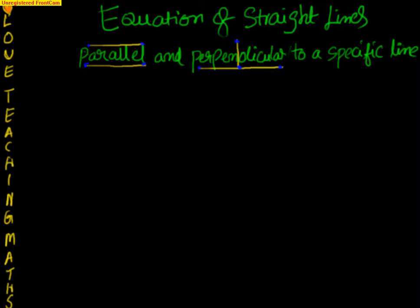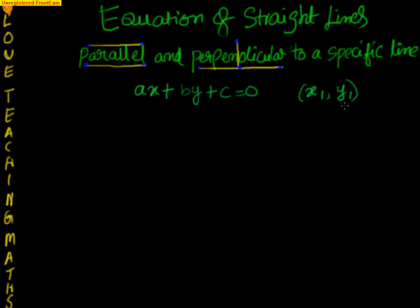Let me take a straight line. We have been given a straight line — let us say the straight line is ax plus by plus c equal to 0. And we have also been given a point x1 comma y1. The problem is: find the equation of the straight line parallel to ax plus by plus c equal to 0 and also passing through x1, y1. Here x1, y1 is a point on the line which we are going to create.